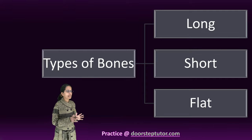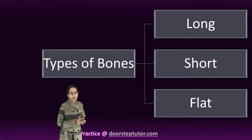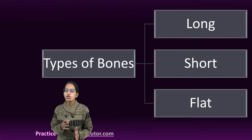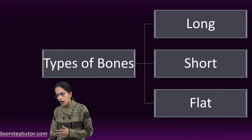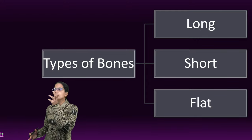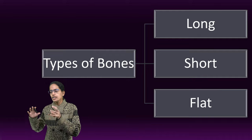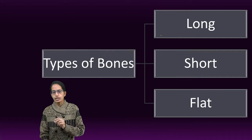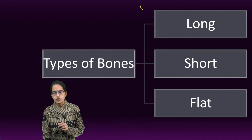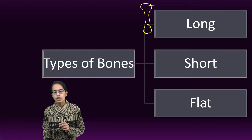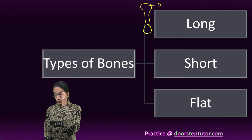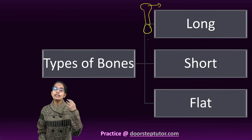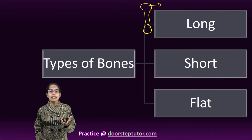Now let's understand the basic classification of bone. Bones could be long, short, and flat. Long bones are found in the limbs — they are long and cylindrical, and the ends have broad shafts. The ends are broad relative to the remaining structure.